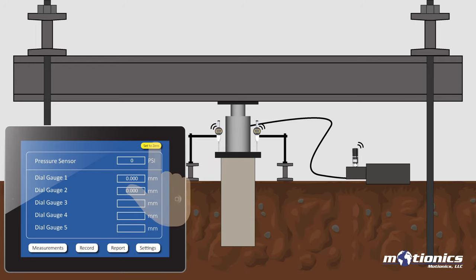Zero all readings in the app to start the test. Start the test by applying the load through hydraulic system based on the test standard procedure and let the app automatically record all device readings. Test results are seamlessly recorded and documented automatically.